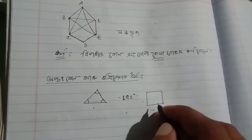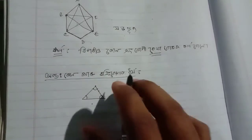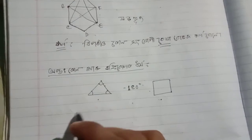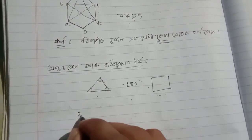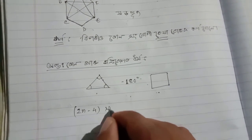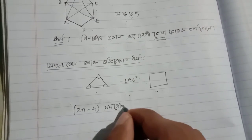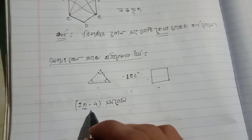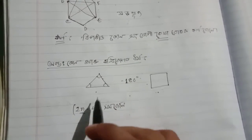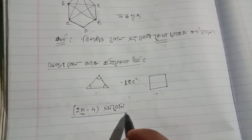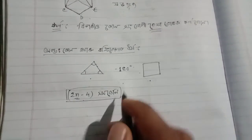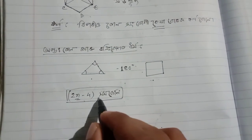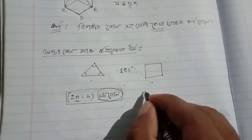The sum of all interior angles of a polygon follows a formula. The sum of interior angles equals (2n - 4) × 90°, where n is the number of sides. So if we know the number of sides, we can find the sum of all interior angles using this formula.